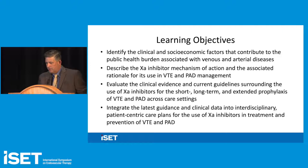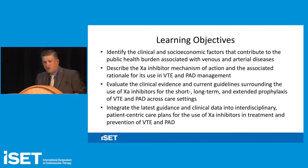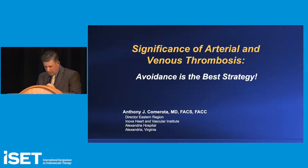Here are the learning objectives. The program is structured with four talks looking at thrombosis in both venous and arterial trees, followed by a series of clinical scenarios discussing how we would manage them. I'd like to welcome Dr. Camarota to the stage. He's going to discuss the significance of arterial and venous thrombosis — avoidance is the best strategy.